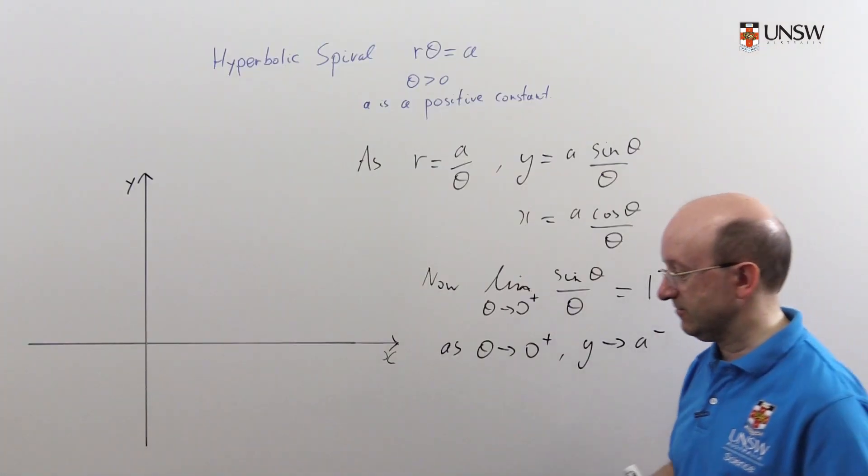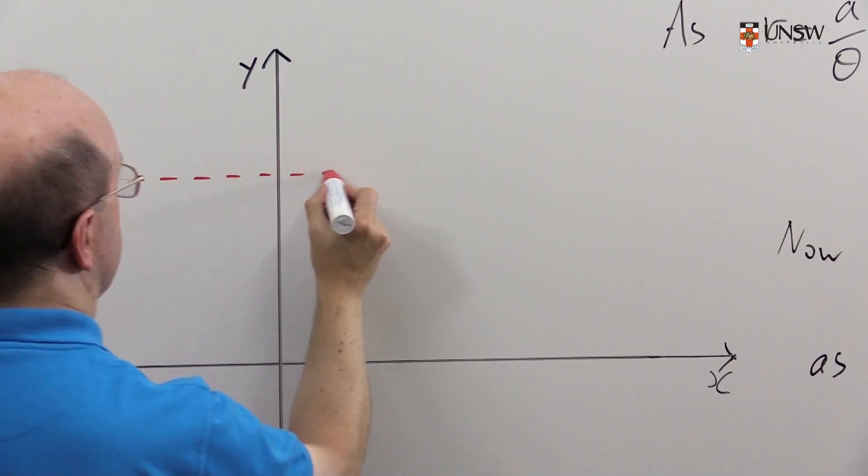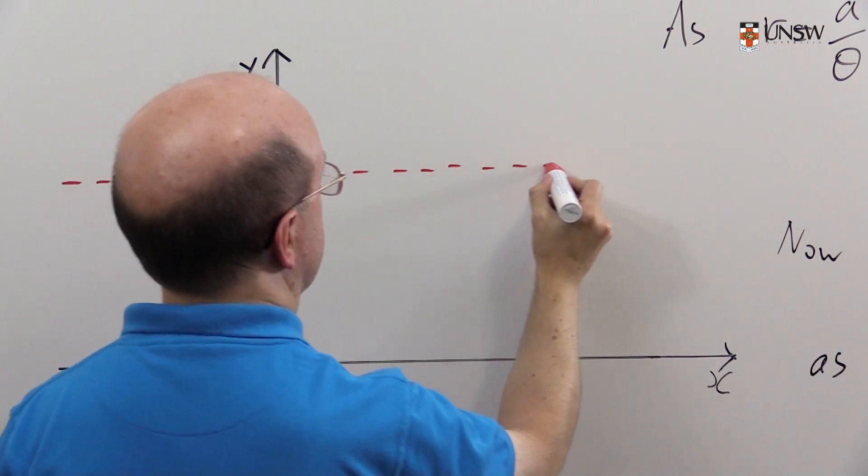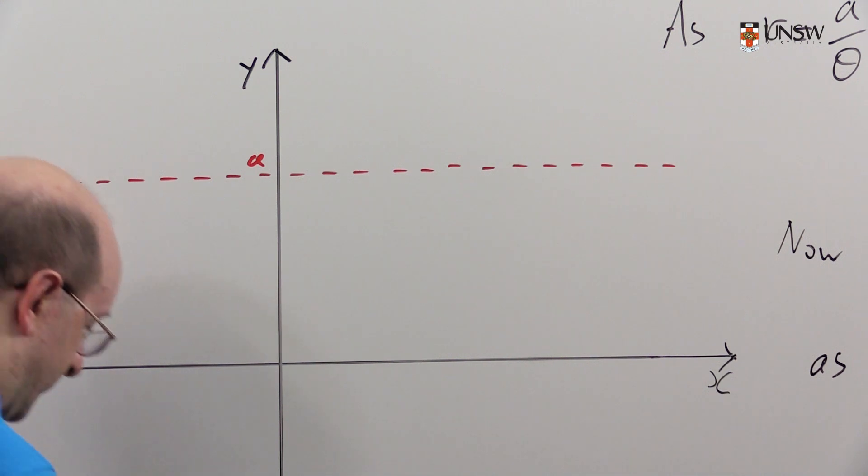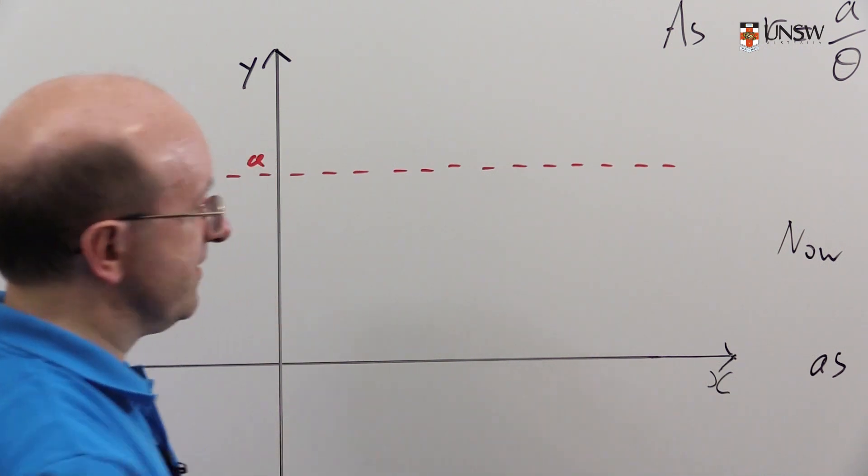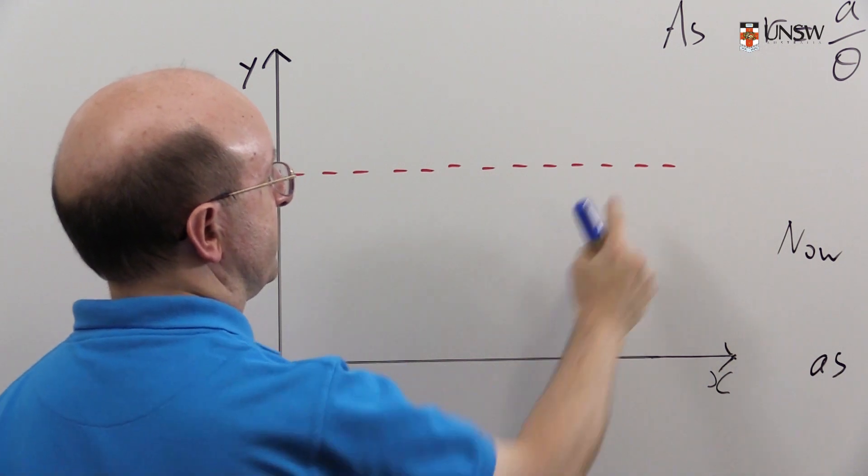So let's put that in now. The asymptote y equals a, there it is. And the curve is tending to this line from below, so it's going to be down here somewhere.